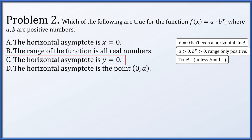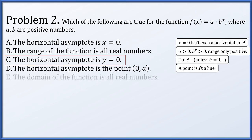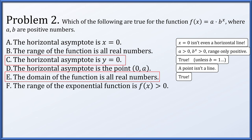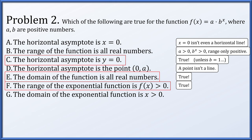The horizontal asymptote is the point (0, a) — but a point isn't a line, so that's false. The domain of the function is all real numbers — this is true. As long as you have a positive base, b to the x has domain all real numbers. Is the range all positive numbers? True, assuming b is not equal to 1. Is the domain only positive x's? No — we've established the domain of exponential functions with positive bases is all reals.